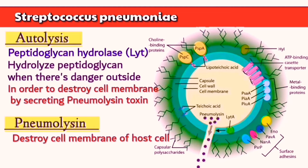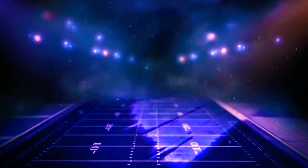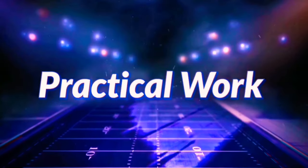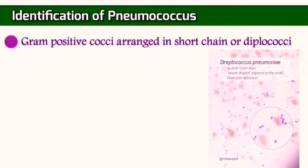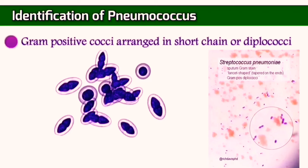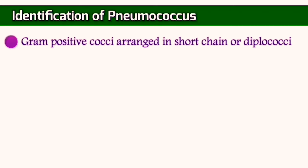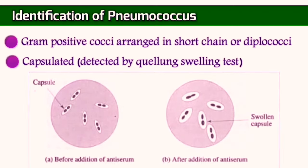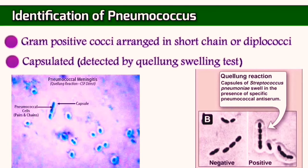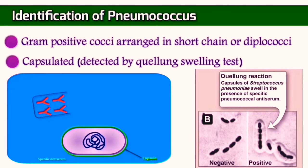In practical work, the Strept pneumoniae appears to be surrounded by a clear area, which is the capsule. Sometimes this capsule may not be well visible and can be detected by the Quellung swelling test, by adding an antisera to the antigenic capsule so they both unite. This leads to the swelling of the capsule, which appears obviously under the microscope.